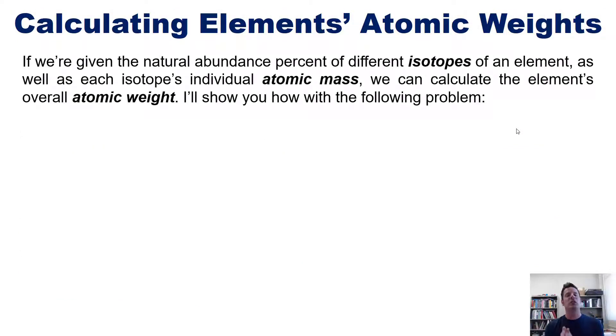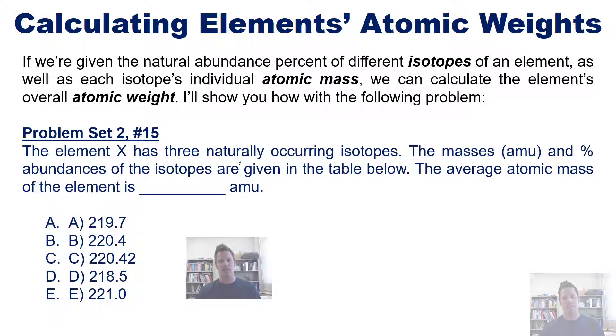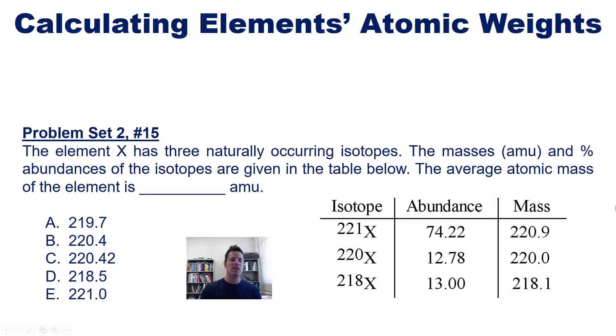So how do we calculate these weighted averages or atomic weights? If we're given the natural abundance percent of different isotopes of an element, as well as each isotope's individual atomic mass, we can calculate the element's overall atomic weight. I'll show you how to do this with the following problem. The element X has three naturally occurring isotopes. The masses in amu and percent abundances of each isotope are given in this table. The average atomic mass of the element is how many amu? Now, if you already know how to do this, you're welcome to pause the video and try this on your own.